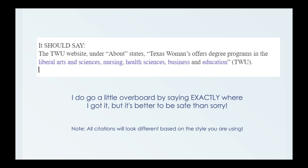I also noted that all citations will look a little different based on the style you are using. I am personally taking two classes right now where one is Chicago Manual style and one is APA 7 style, so I get a bit confused with the in-text citations because they are pretty different. Here I used APA, where the period goes outside the parentheses rather than inside the quote marks. It'll look different if you are using Chicago Manual style, so if your assignments don't look like that, do not worry.